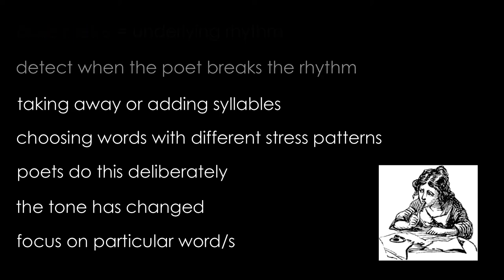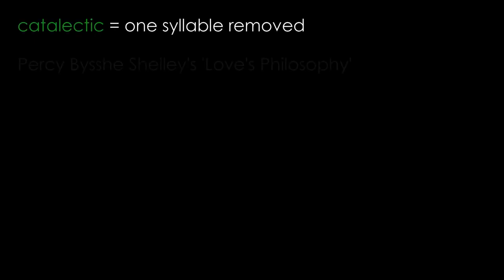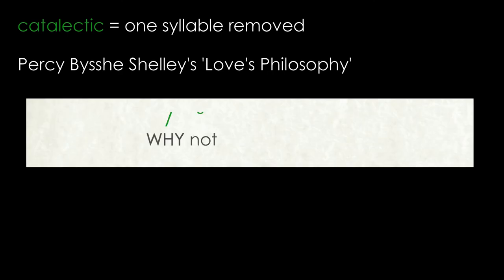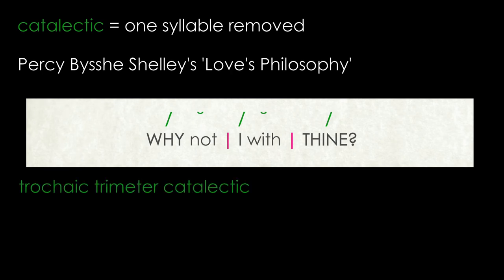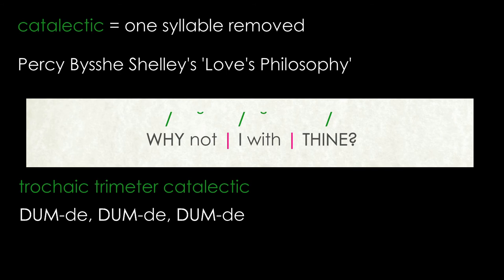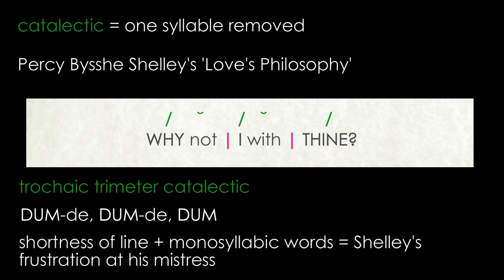One way of doing this is to either add or take away a syllable at one of the ends of a line. When a syllable is taken away, the line is said to be catalectic. Shelley makes a number of his lines in Love's Philosophy catalectic: 'Why not I with thine?' Here the line is trochaic trimeter catalectic. Trochaic trimeter consists of three trochees — dum-dee dum-dee dum-dee — so trochaic trimeter catalectic is where the final unstressed syllable is removed: dum-dee dum-dee dum. The shortness of this line, in conjunction with the use of monosyllabic words, serves to communicate Shelley's frustration at his mistress's refusal to enter into a physical relationship with him.